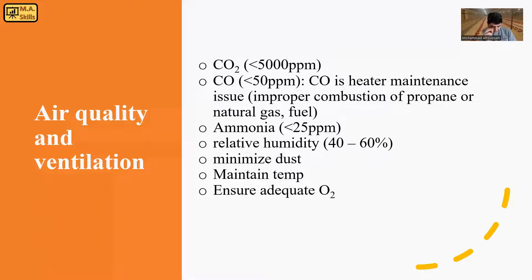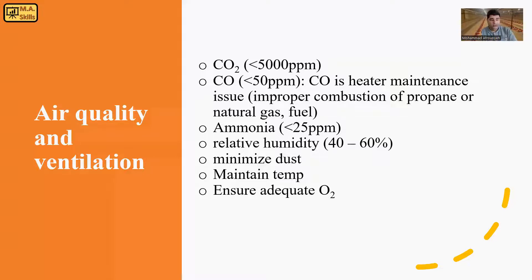The level of ammonia should be less than 25 ppm. Ammonia is one of the most common challenges in barns because it can arise from manure and fecal materials, and it can decrease performance. That's why we need strategies in place to reduce ammonia — it's not just by ventilation. Ventilation can help, but it's related to other aspects as well, like litter management, which I'll discuss in the next section.